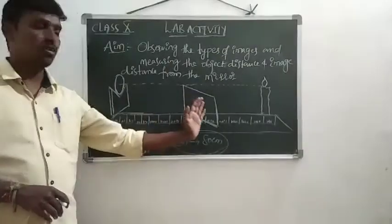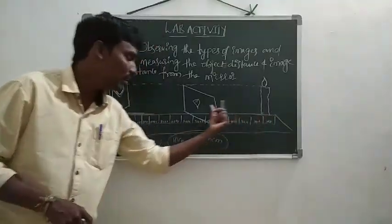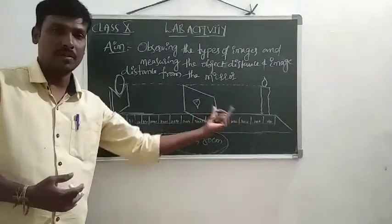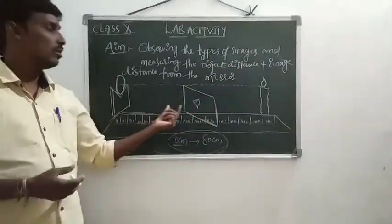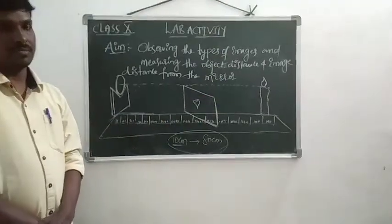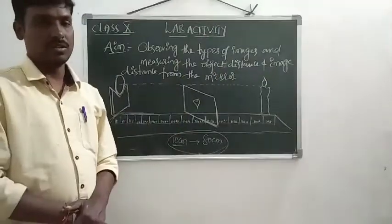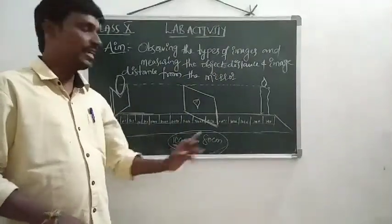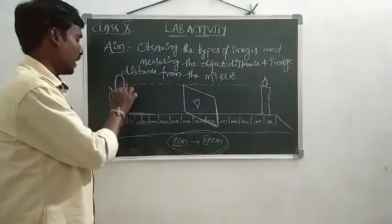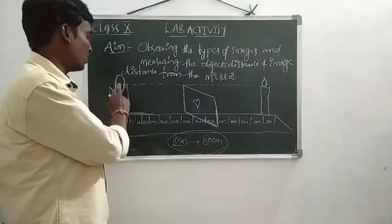Suppose we arrange the candle at 10 cm, 20 cm, and so on. For each object distance, find the image distance by locating the sharp image on the screen. Record values from 10 cm to 80 cm in the table.